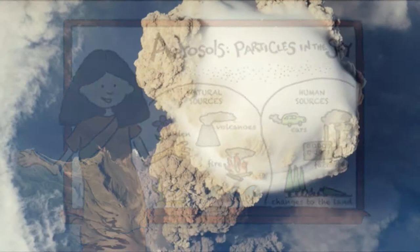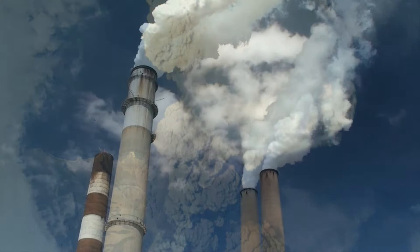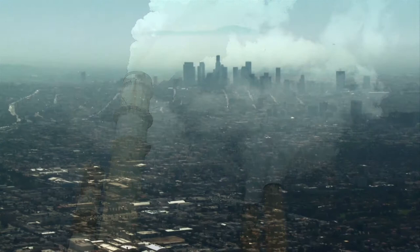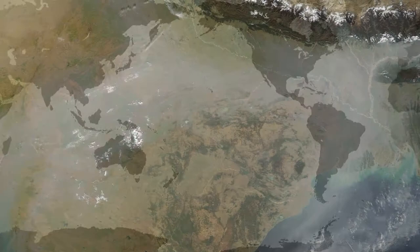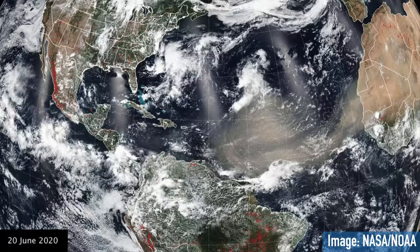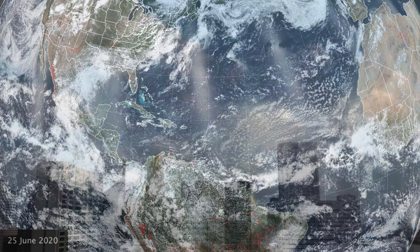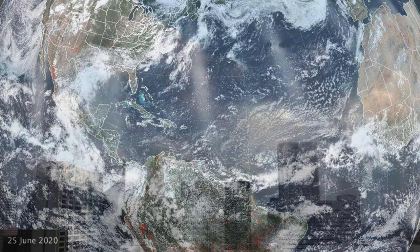Not all aerosols are the same. Some aerosols have a cooling effect — some of them look white and they reflect sunlight back to space. Some of them are darker and they absorb sunlight, which heats the atmosphere. What I do in my work is I study mostly these darker aerosols. They absorb sunlight, they can heat the atmosphere, and this can change how clouds form under these conditions. So aerosols are very important for clouds.